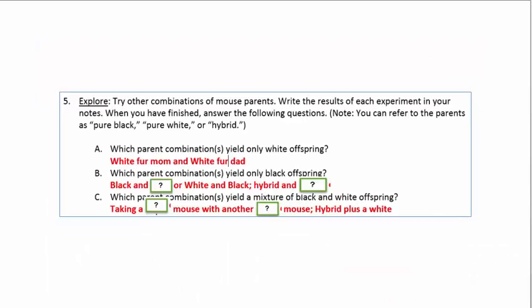Now let's take a look at number five. So number five A says which parent combinations yield only black furred offspring? I gave you that answer. You're welcome. So if we have a white furred mom and a white furred dad, we will only get white furred offspring.